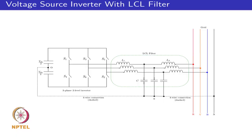Welcome to class 40 in Topics in Power Electronics and Distributed Generation. We have been looking at damping of resonances in LCL filters. One way to provide damping is passive damping. In passive damping, a resistor or a network with a resistor is added to the LCL filter. The objective of passive damping is to minimize the quality factor of the filter at resonance and do that with minimum power dissipation.